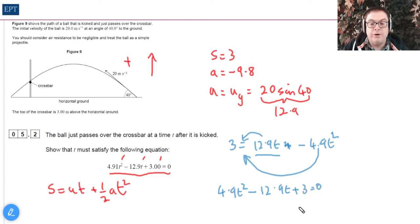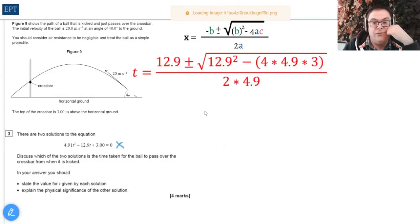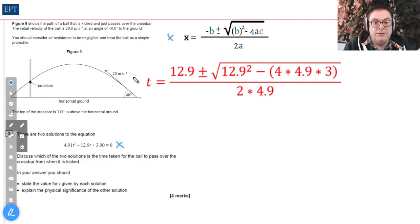Part three is asking us to find the roots of this equation and then comment on the two values. I'm not going to spend ages doing the maths here, but if you use the quadratic equation given above and fill in the numbers, you will get something like the orangey-reddy thing I've just put on the screen. When you solve that, you will get the following two roots: t = 0.258 and t = 2.37.